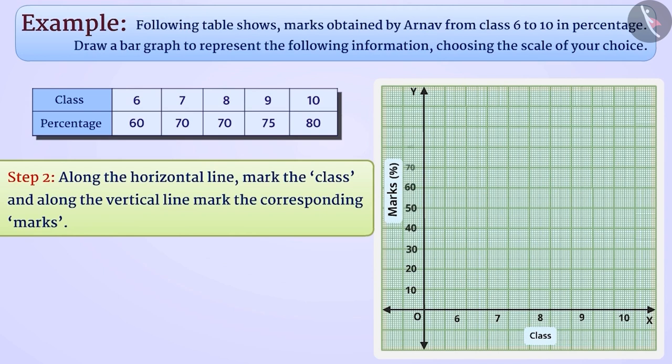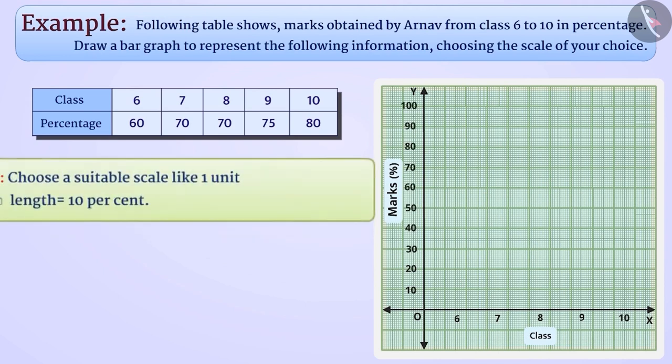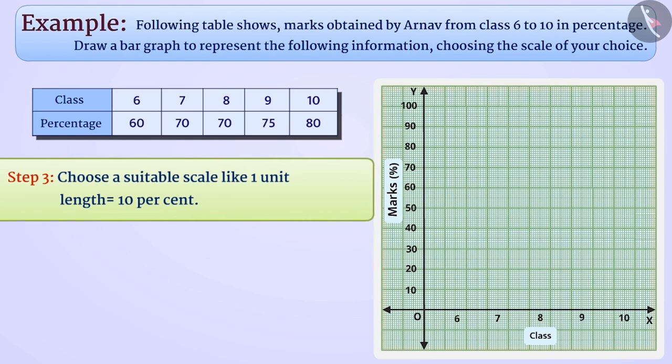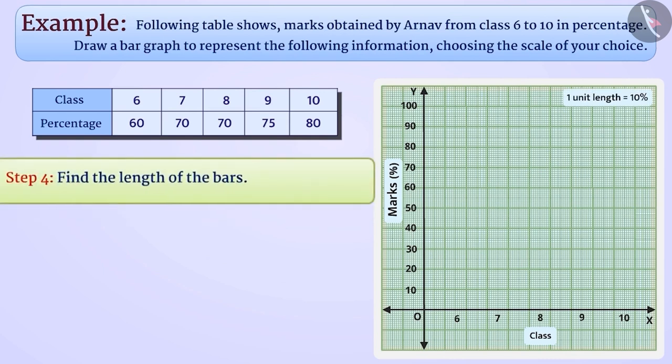Step 3: Next, we will choose a suitable scale along the vertical line. Here, 1 unit length represents 10%. Therefore, we will choose the scale as 1 unit length is equal to 10%.